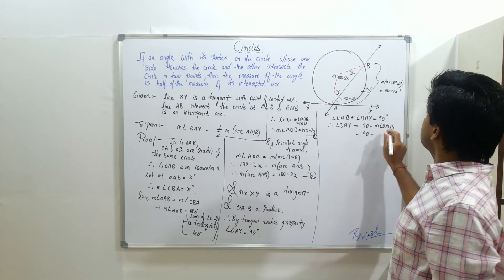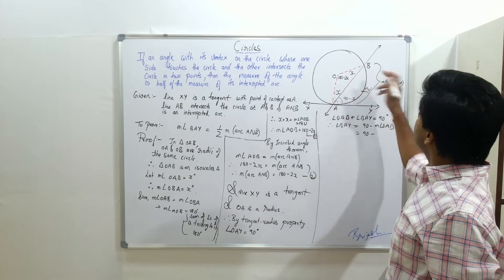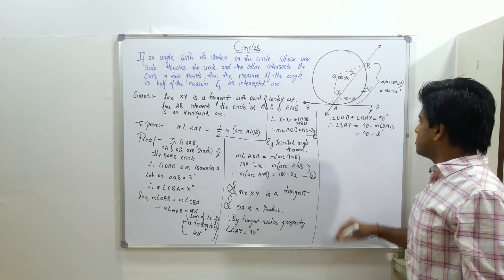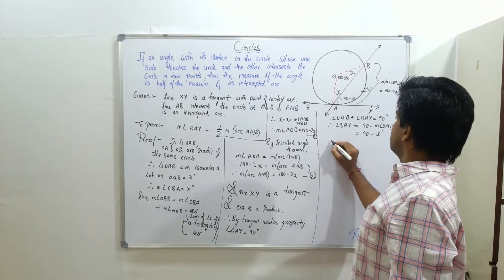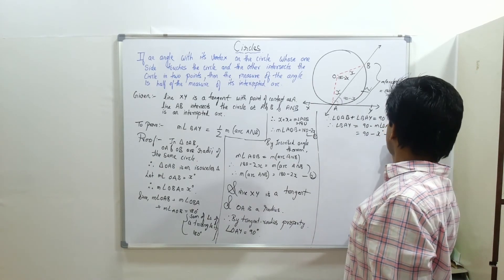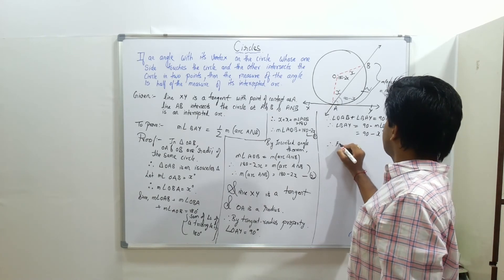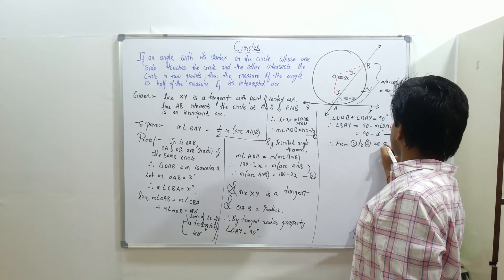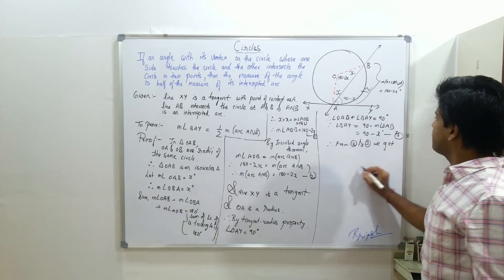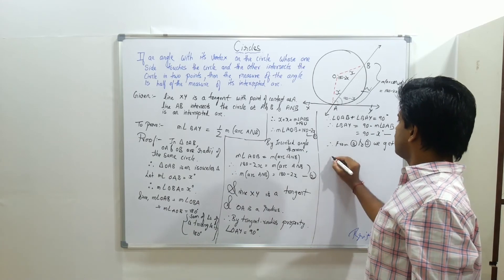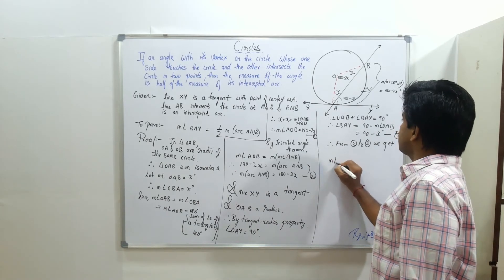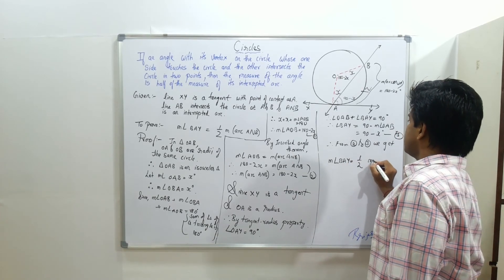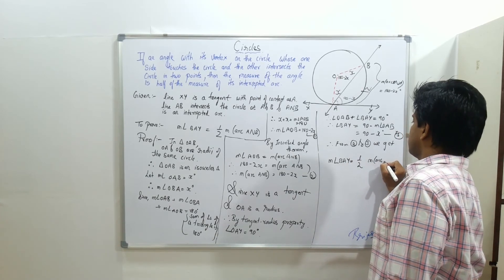So 90 minus measure angle OAB, and OAB is X. Therefore, from equations 2 and 3, we get measure angle BAY equal to half of measure arc AB.